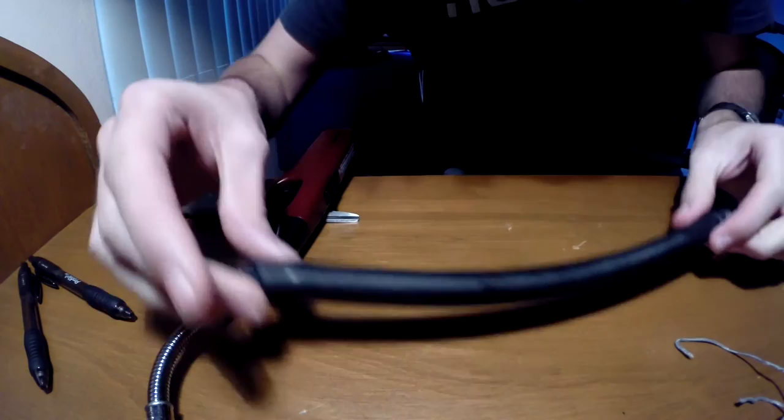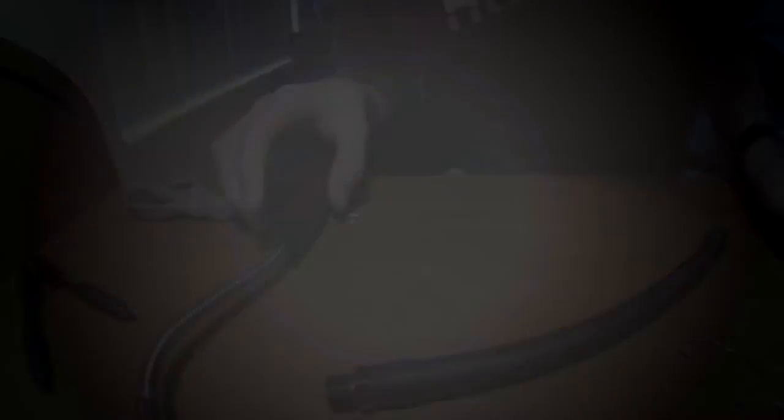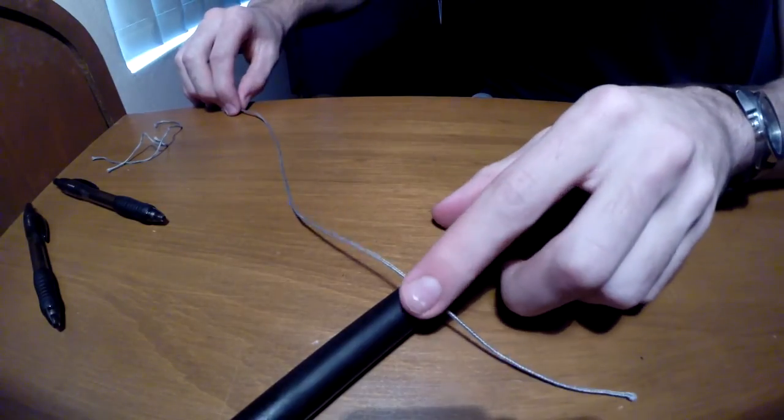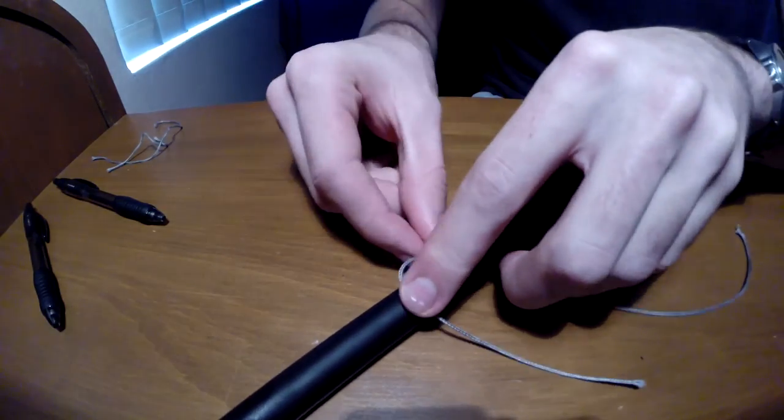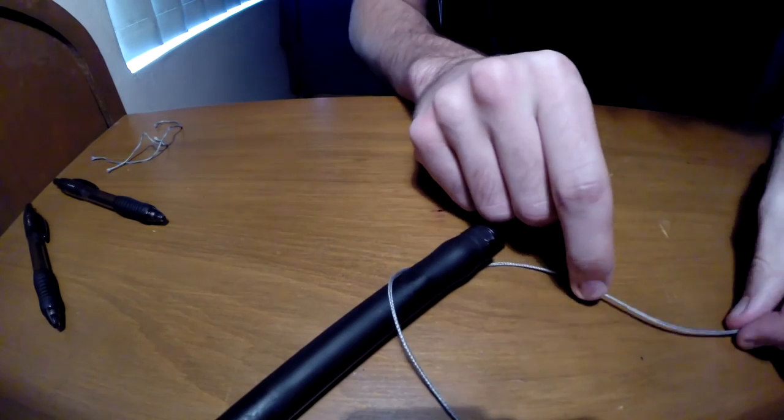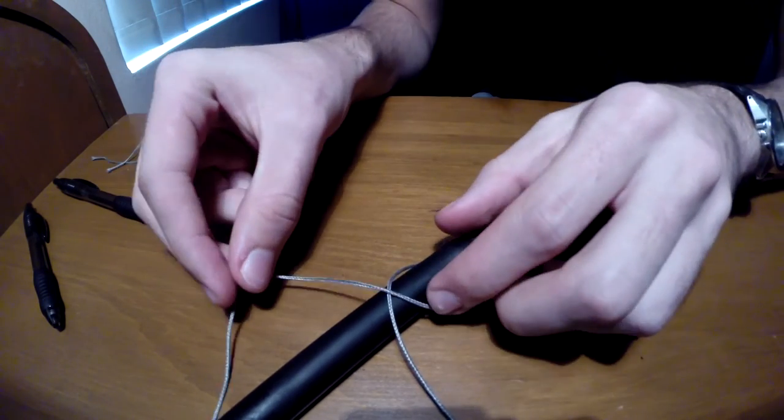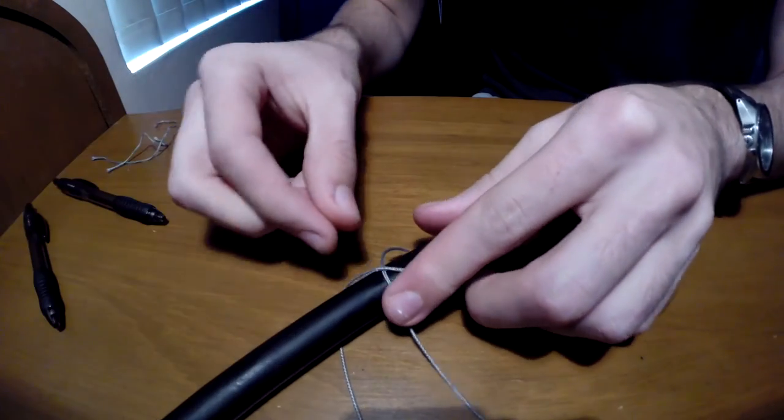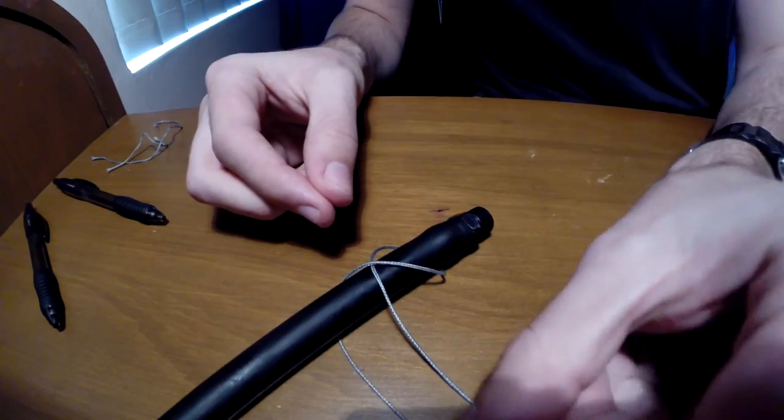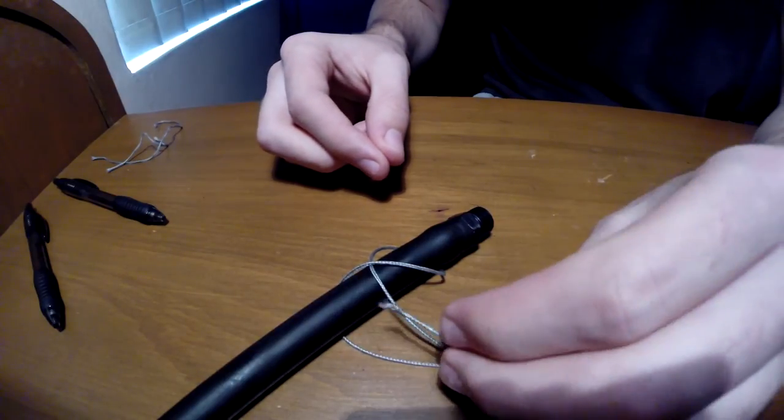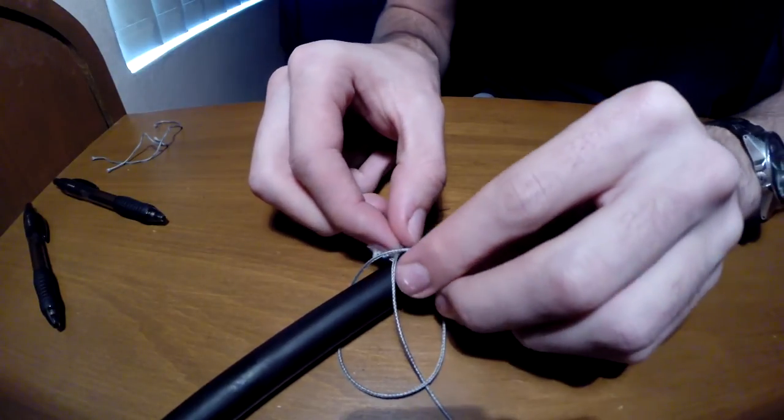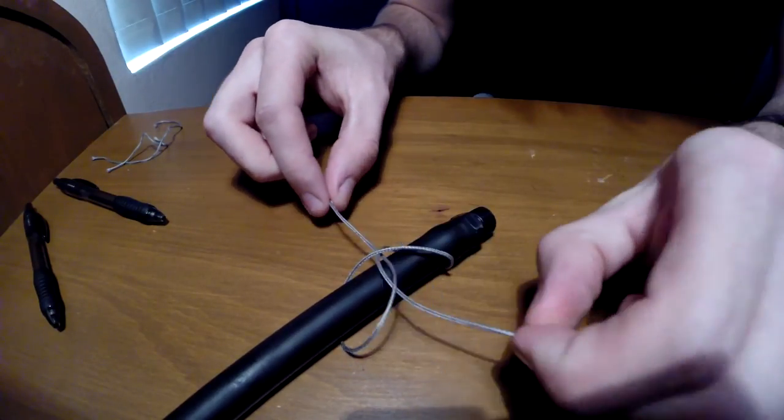Now, all we need to do is tie the other side. I'm just going to repeat the same process again. Get your line, lay it on top, bring the right-hand side underneath on the bottom, bring it back over the top to form the X. Bring it back under. Now you're going to take it over the top of this line, through the gap, pull it tight.